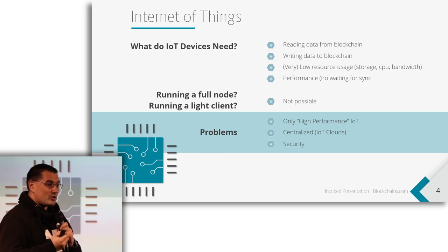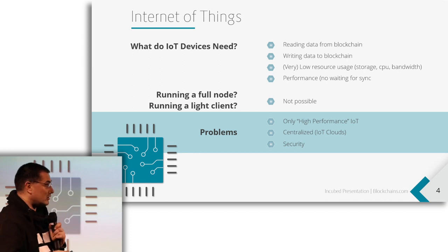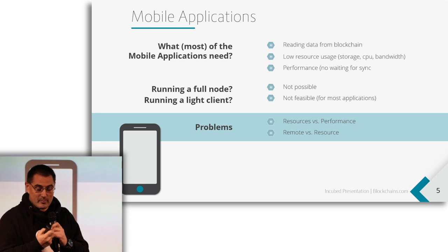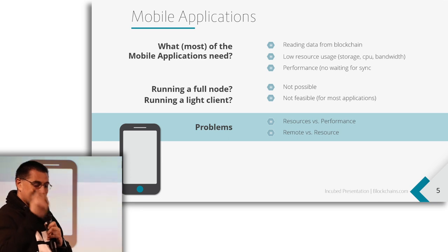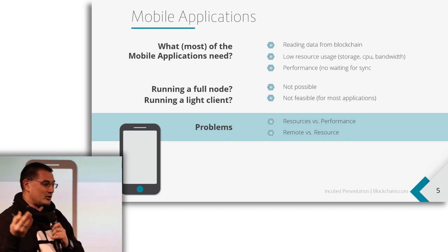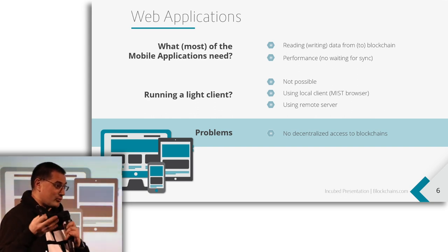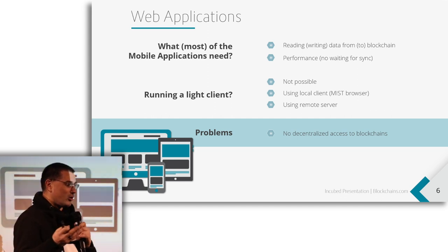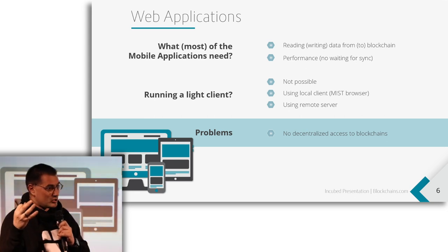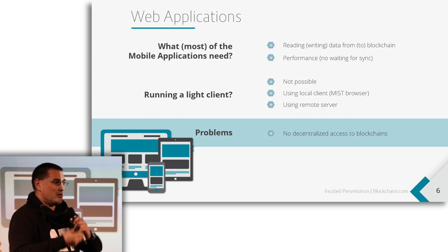This is a really tough thing because most IoT devices are very small microcontrollers, and it's very hard or impossible to run normal synchronizing clients on them. Another problem is with a mobile app — you can run a light client, but it's not an easy task because you have a lot of energy consumption and it needs a lot of traffic. And for a web page, it's not really possible to run a client. You can connect to a service or run a client on a computer, but if you have only a web page and want people to access data directly from the blockchain, it's not possible at all.